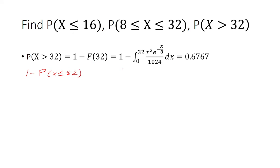And that's equivalent to that. The other approach was to say that probability x is greater than 32 is also the integral from 32 to infinity. So that's also acceptable. Either of these two methods, the answer is 0.6767.